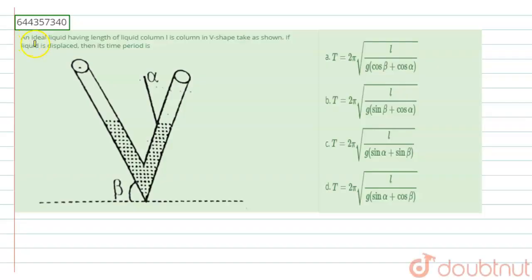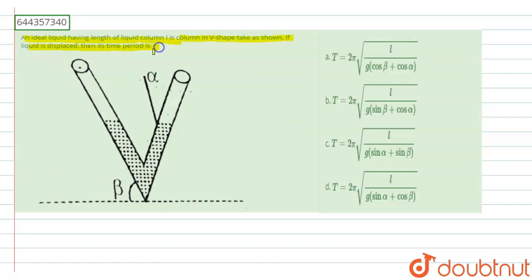Hi, the question is: an ideal liquid having a length of the liquid column L in a V-shaped tube. If the liquid is displaced, then its time period is — we have to find the time period, and the options are A, B, C, D.